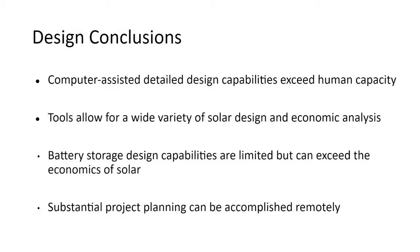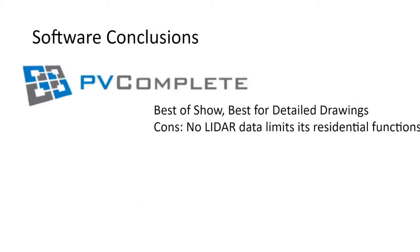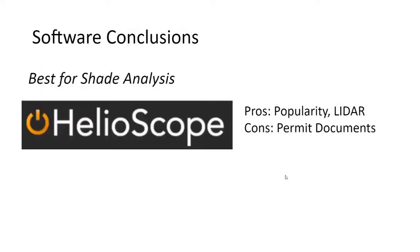On a brighter note, a substantial amount of project documentation can be conducted offsite. I'd say PV Complete would be my best of show — mainly because as a solar design engineer I have a passion for detailed construction drawings and PV Complete can generate the most detailed drawings in-house. Although it definitely has a big con in that without LiDAR data its shade analysis functions will be limited. If you go with PV Complete you may also need another software for shade analysis — or you get ballsy and say you don't need to do shade analysis.